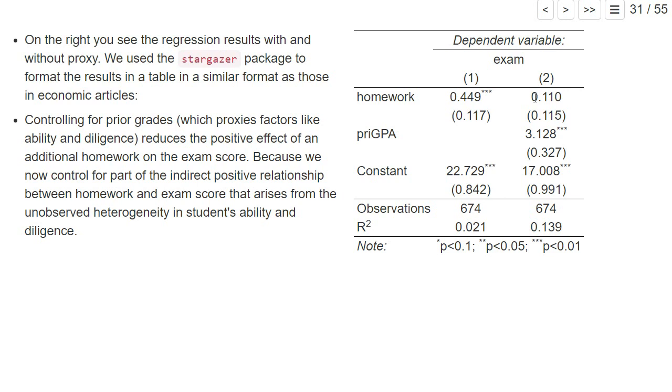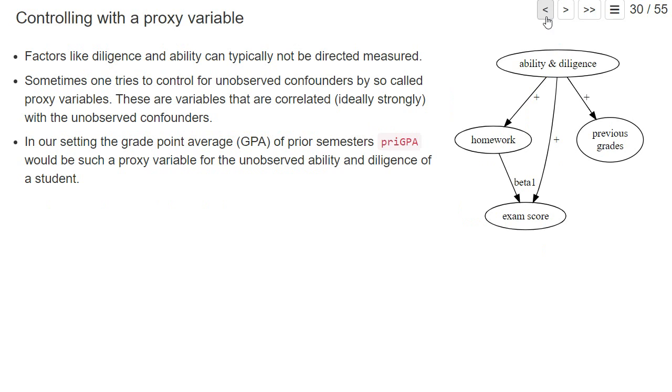But more importantly, it also changes our estimated coefficient for homework—it basically goes down. This is along the idea that our graph has suggested, that ability and diligence will generate a positive bias.